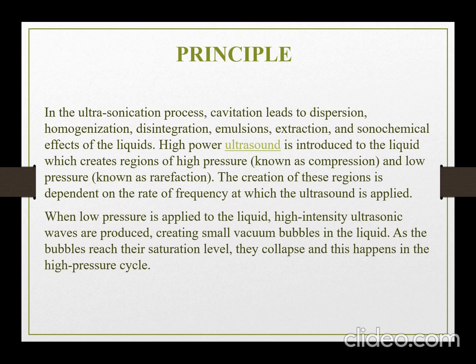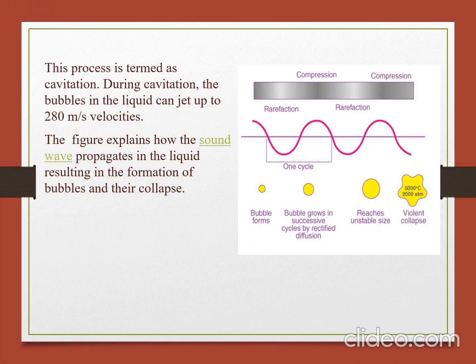When low pressure is applied to the liquid, high intensity ultrasonic waves are produced, creating small vacuum bubbles in the liquid. As the bubbles reach their saturation level, they collapse, and this happens in the high pressure cycle. This process is termed as cavitation. During cavitation, the bubbles in the liquid can jet up to 280 meters per second velocity. The figures explain how the sound waves propagate in the liquid, resulting in the formation of bubbles and their collapse.